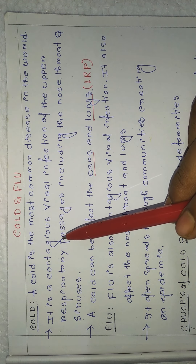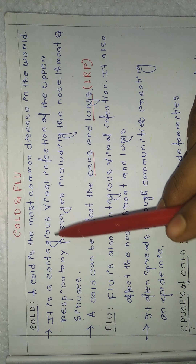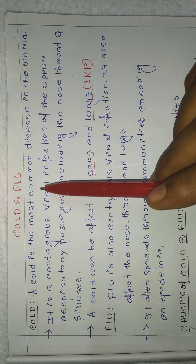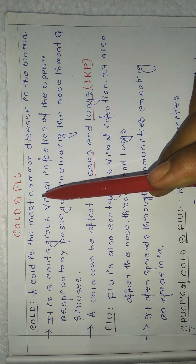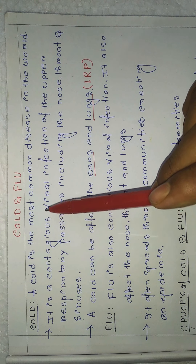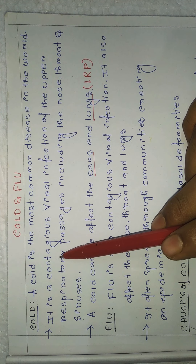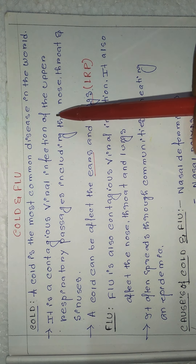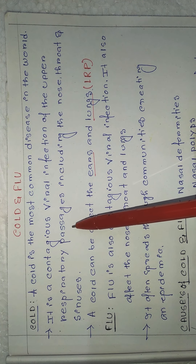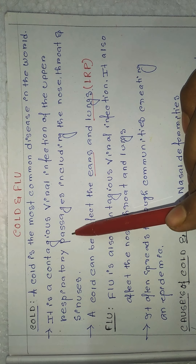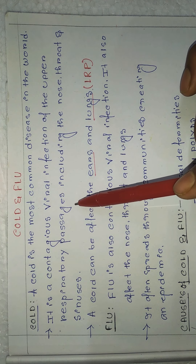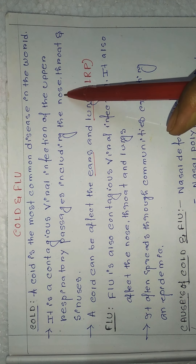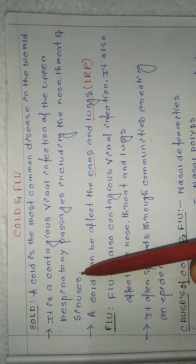First of all, we will see the definition of the two terms. Cold is the most common disease in the world, and this is a contagious viral infection of the upper respiratory system. The upper respiratory passage includes the nose, throat, and sinus.